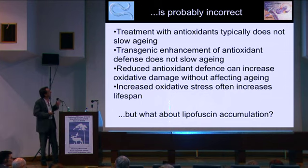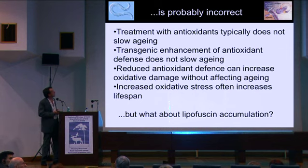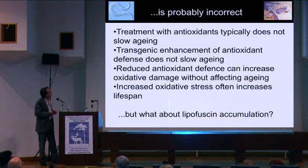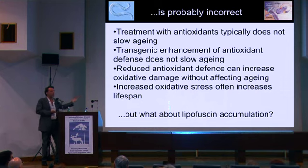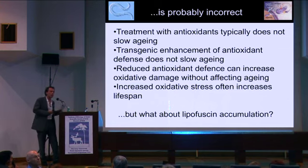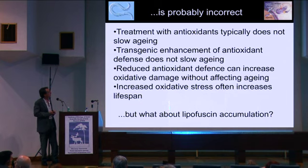In the worm, for example — this is work from a number of labs, my lab, and that of Siegfried Hekimi, and Michael Ristow, and others — typically if you treat the worms with antioxidants they don't live longer, and you can overexpress antioxidant enzymes and not see the expected effects on aging. You can reduce antioxidant defense and increase levels of damage and not see the expected acceleration of aging. Sometimes you can even increase oxidative stress levels and end up with an increase in lifespan. The theory seems to have some clear constraints.